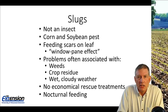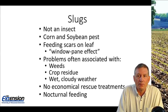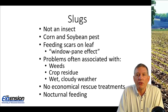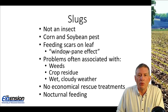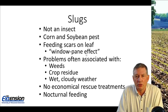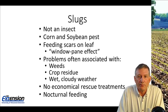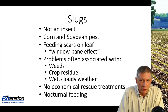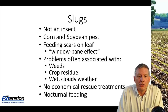With slugs, I do want to point out that they're not an insect — they're a mollusk. Therefore, our insecticides do not control slugs at all. They are pests on corn and soybeans; however, soybeans are probably much more susceptible to slug feeding than corn. The feeding scars left from slugs is what we call window paning — that's from the slug feeding on the leaf, not going completely through the leaf, but maybe leaving part of that leaf cuticle intact. The damage is often associated with wet weather, crop residue, and also weeds — any environment that will help shade slugs from the hot dry sun will promote their survival.